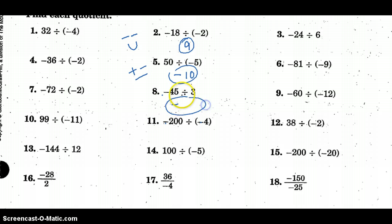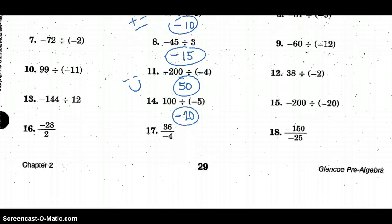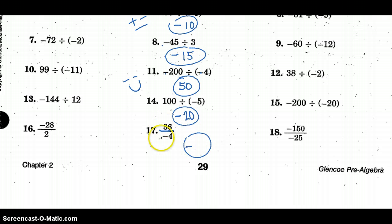This is going to be a negative answer. 45 divided by 3 is 15. Two negatives make a positive, so positive answer: 200 divided by 4 is 50. Two opposite signs — negative answer. Do you see how quickly I'm deciding if it's positive or negative? 5 times 20 gives 100. Here is a division bar rather than the division symbol — some think of it as a fraction, but all fractions are division. 36 divided by negative 4, opposite signs, negative answer — 4 times 9.